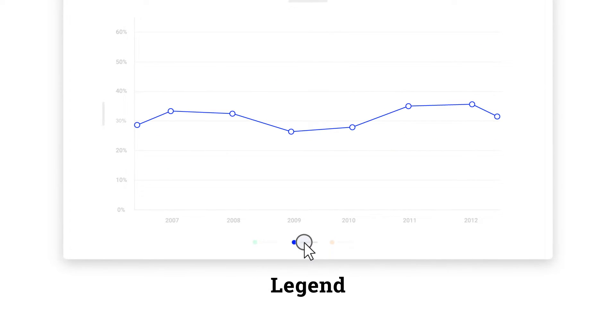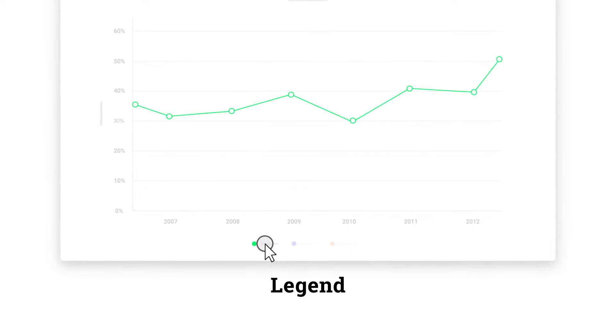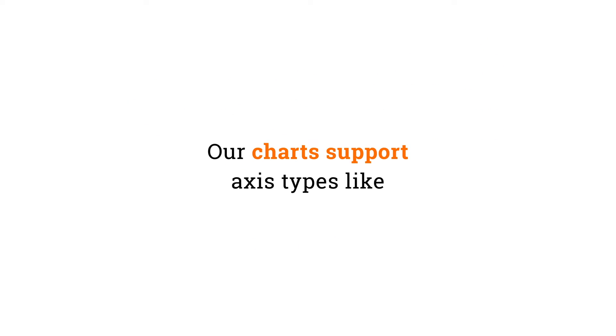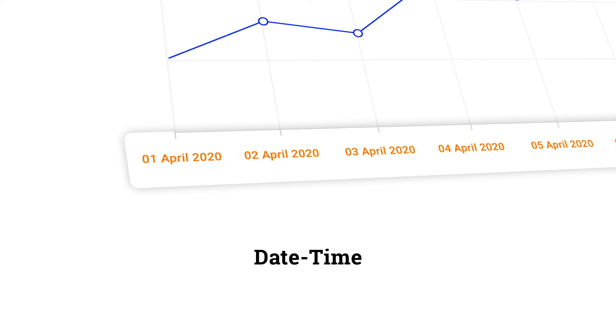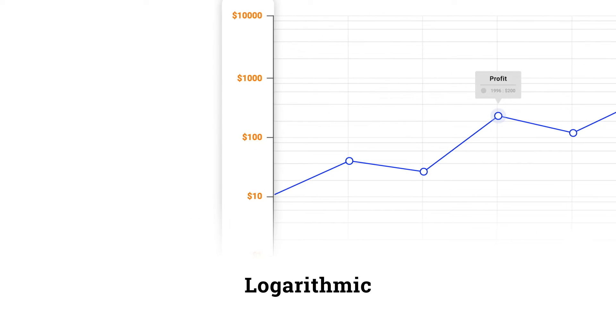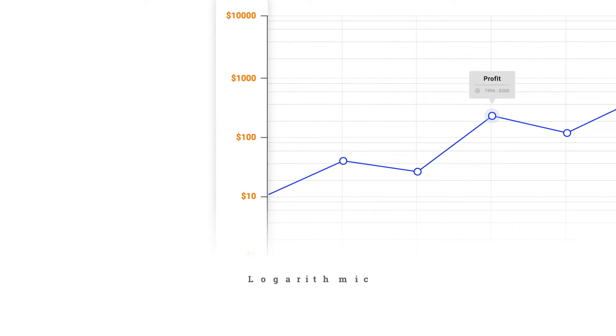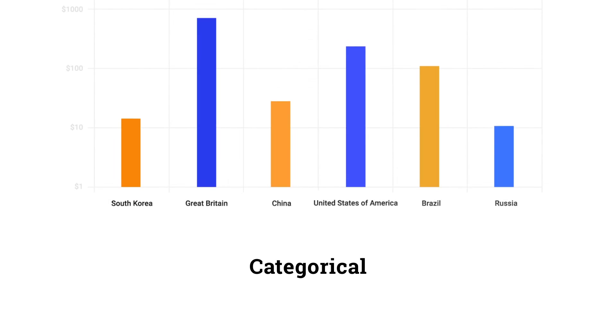The legend provides information about the series in the chart. The chart supports axis types like numeric, datetime, logarithmic, and categorical.